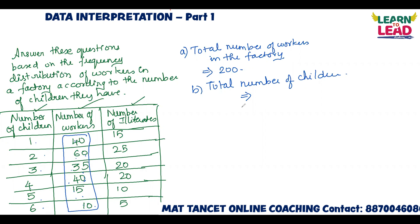40 workers have 1 child each, so the total is 40. 60 workers have 2 children: 60 × 2 = 120 children. 35 workers have 3 children: 35 × 3 — 30 threes are 90, and 5 threes are 15, so 105. 40 workers have 4 children each: total 160. 15 workers have 5 children each: total 75. And the last group gives 60.